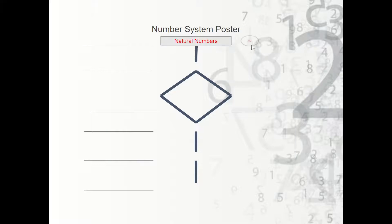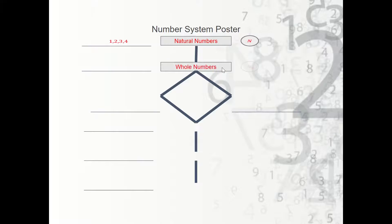The symbol for natural numbers is N. Examples are 1, 2, 3, 4, and so on. Once we know how to count, the next thing we learn is there's a number that represents nothing — zero. When someone asks how many apples you have, you need to be able to say you have none. So we add zero, and we call that set the whole numbers. Whole numbers are denoted N₀ — the natural numbers plus zero. Examples are 0, 1, 2, 3, 4, 5, etc.